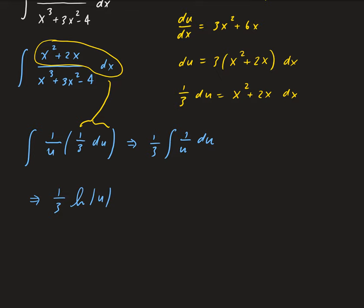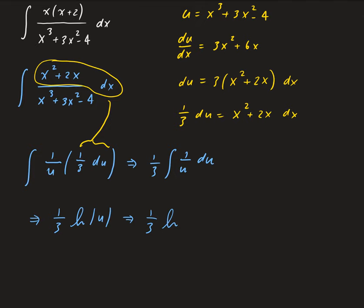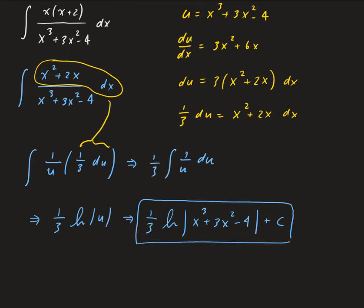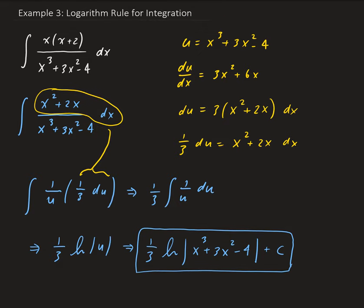So we have (1/3) times the natural log of the absolute value of u, plus C. Replacing u with the original expression gives us (1/3) times the natural log of the absolute value of x cubed plus 3x squared minus 4, plus some constant. So again, we let u be the denominator, factored out 3 to get the expression in the numerator, and then used the definition of the integral of 1 over u, which is natural log u, then replaced u with the function in terms of x.